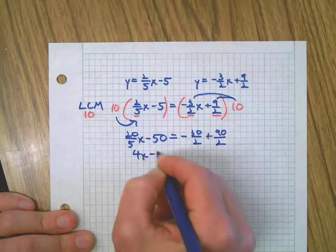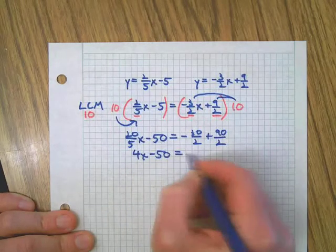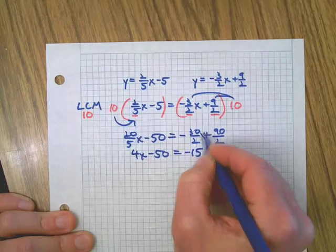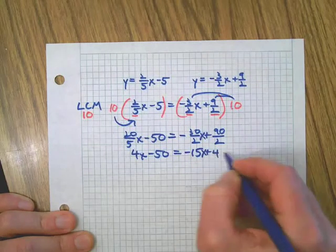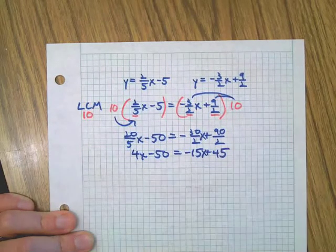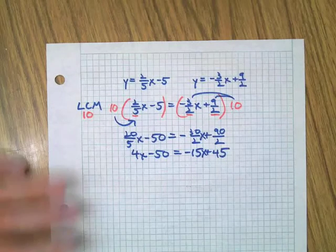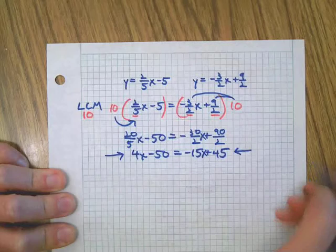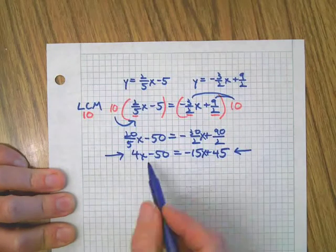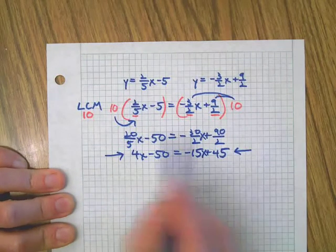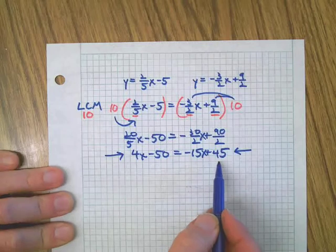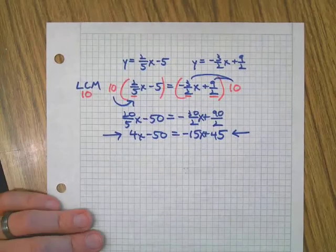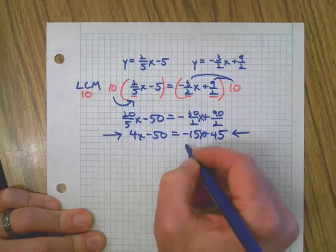Okay, looks like our fractions are gone in one more step. 20 over 5 is 4. And now we see our new equation showing itself: 4x minus 50 equals negative 15x plus 45. The educational objective of this video was just to get you to this point, to change it from the fractions into an equation that has no fractions.